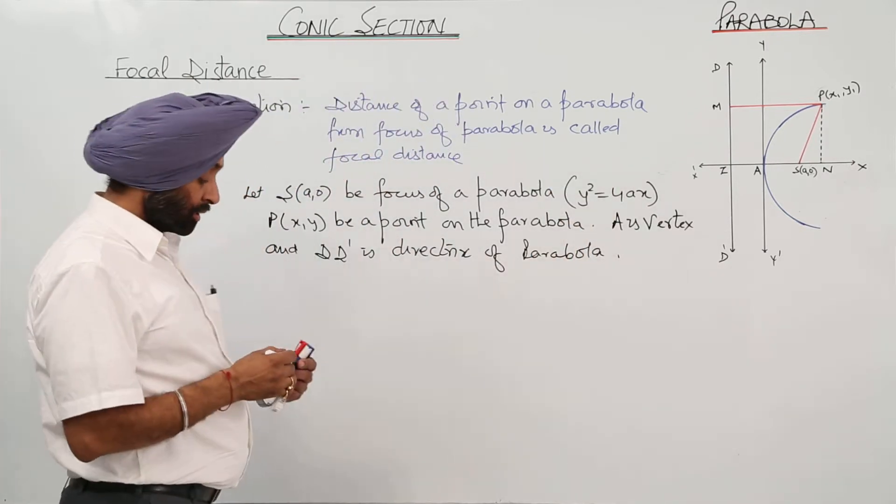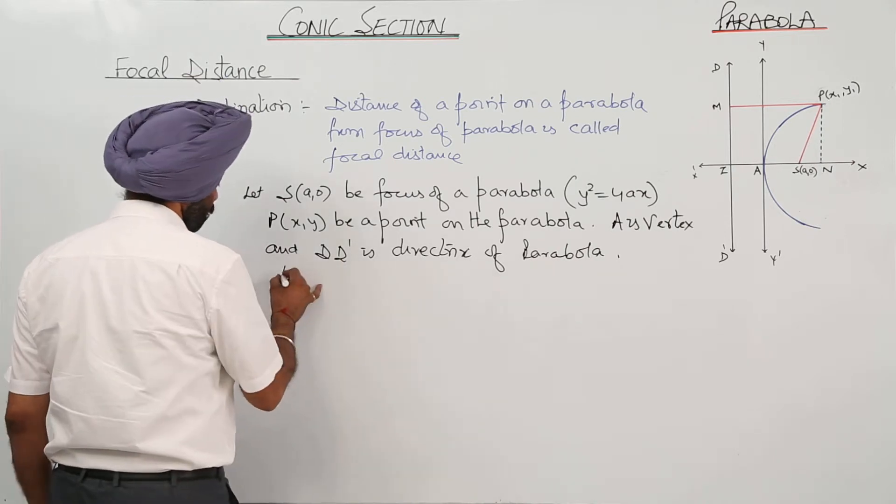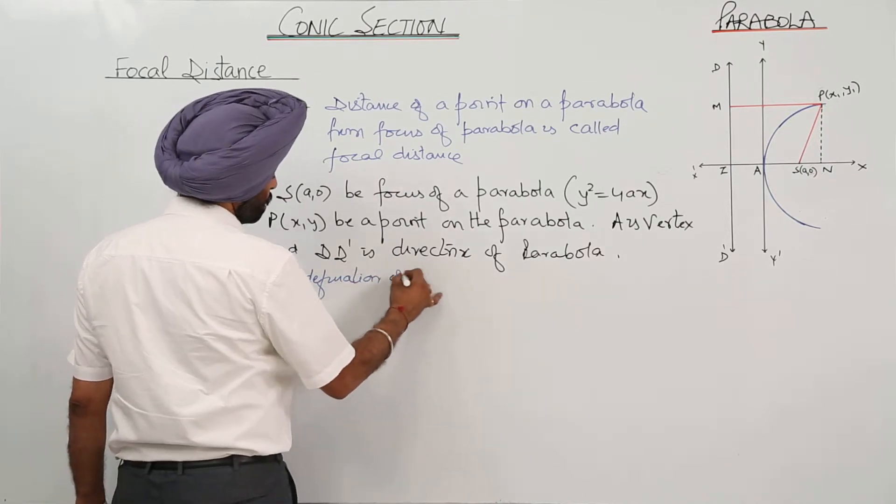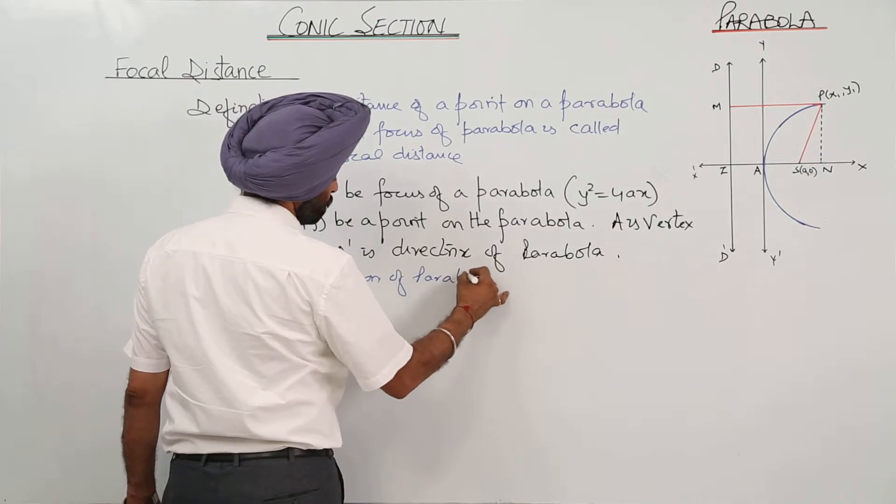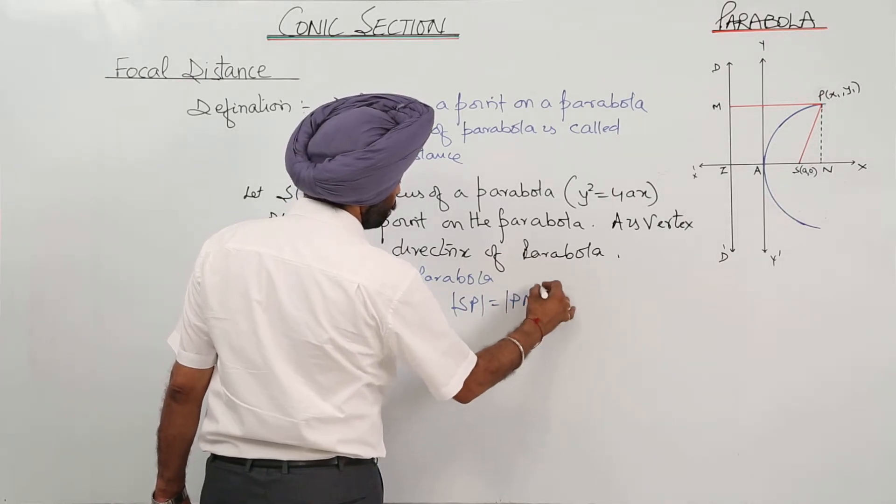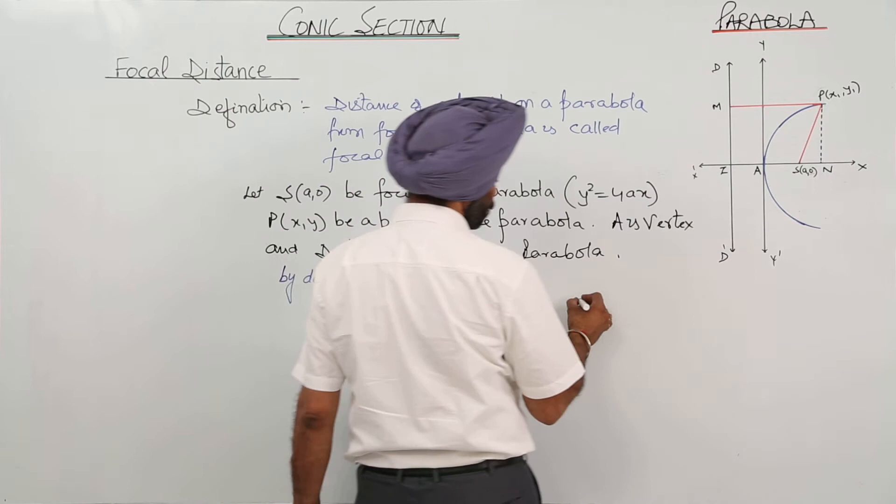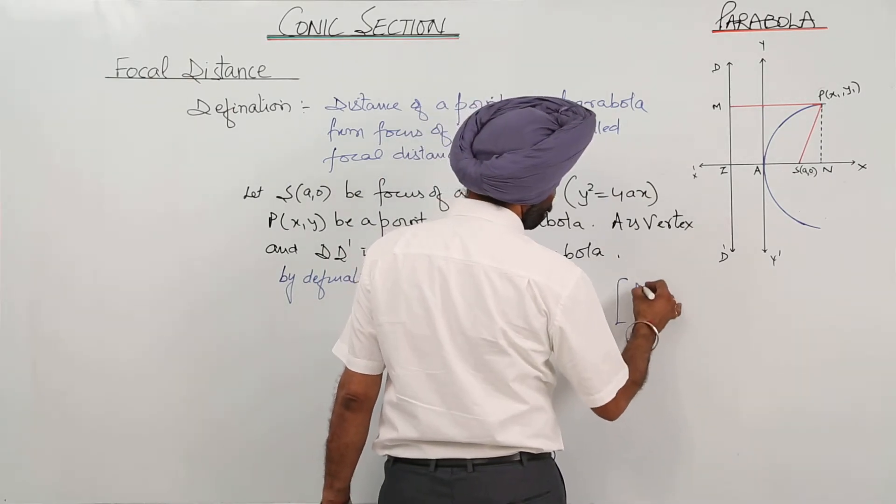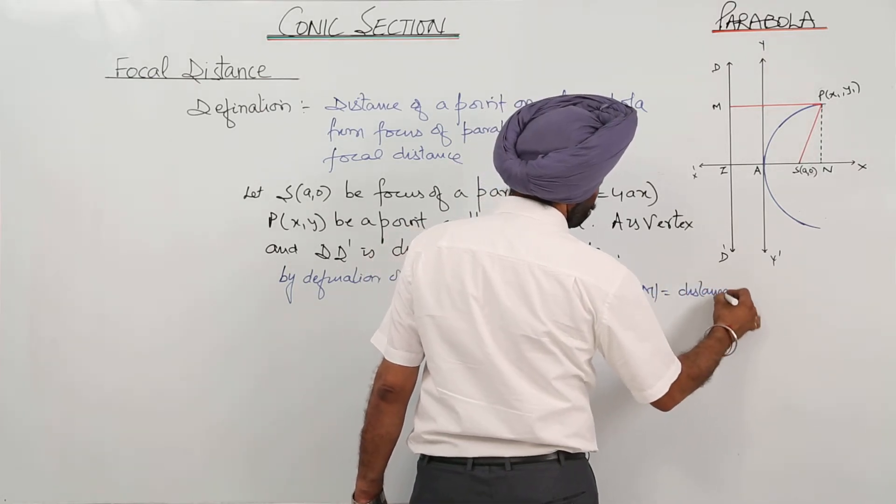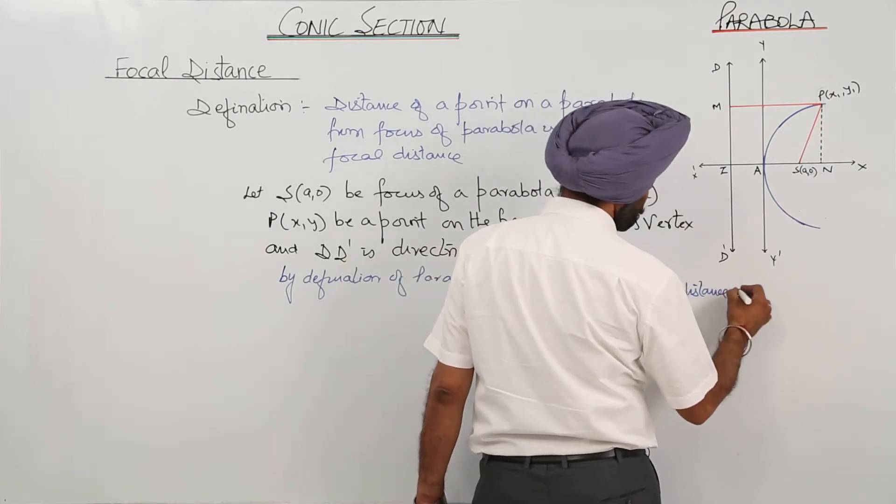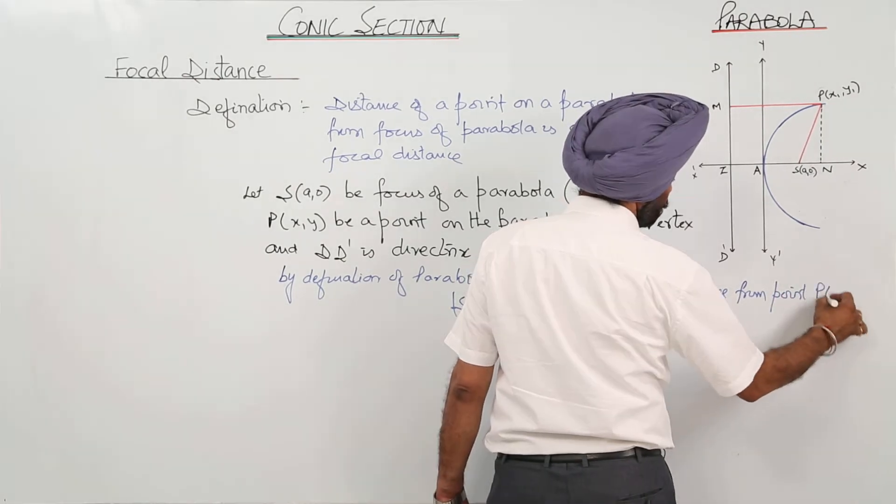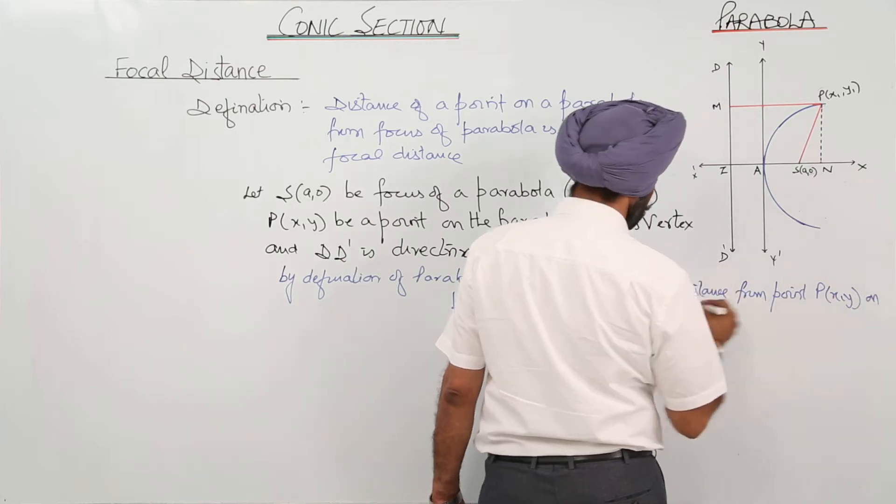Is it clear? Now, by definition of parabola, SP is equal to PM. Now what is PM? Distance from point P on directrix.